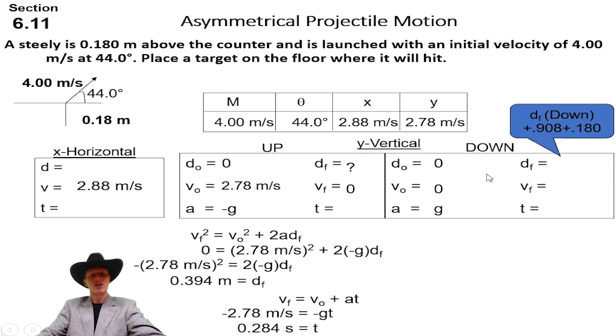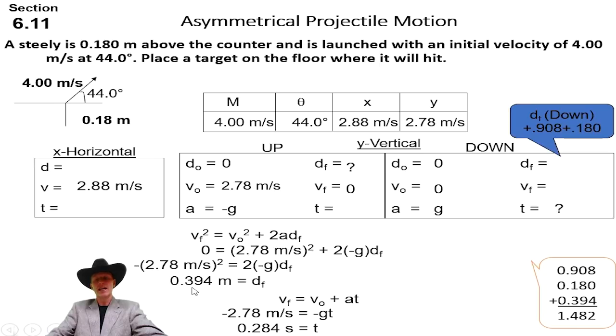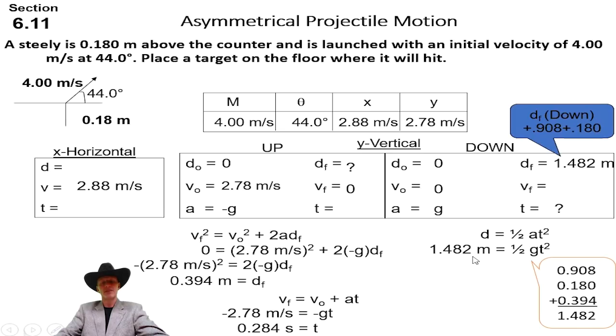We can use the third equation to get how high it rises above where it started, and that's going to be about 39 centimeters. Now we can use the first equation to get our time. The time that it takes to go up is about 0.284 seconds. Now we can get into this box because these two d's are connected. This d plus vertical difference is going to equal this d. If we add those two plus how high it rose together, we would get this 1.482 number. That is how far it's going to fall vertically.